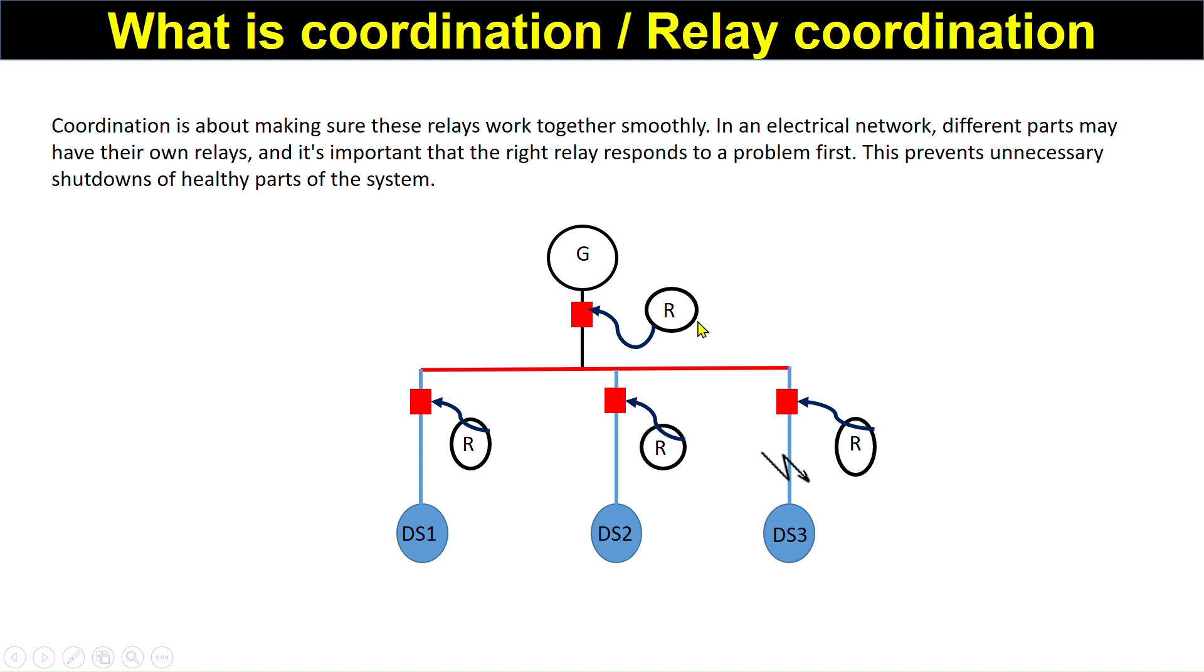Suppose there is no coordination - the relay senses the fault and sends the signal to this circuit breaker and it opens. What will happen? The fault is here but these two others are also affected. With relay coordination, what will happen? Only this distribution with the problem can be isolated from the system, and the two remaining transformers will not get affected. That is relay coordination.